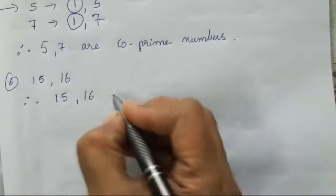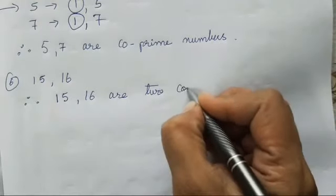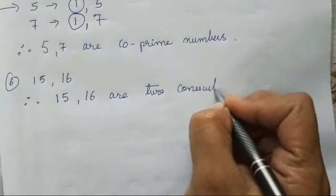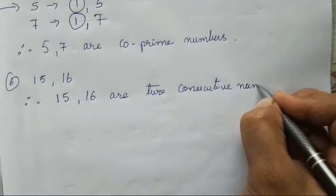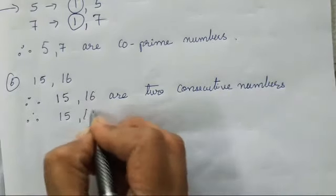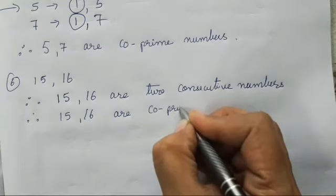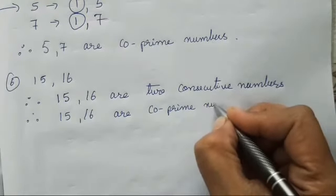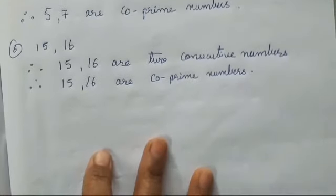So, you all can write 15 and 16 are two consecutive numbers. Therefore, 15 and 16 are co-prime numbers.